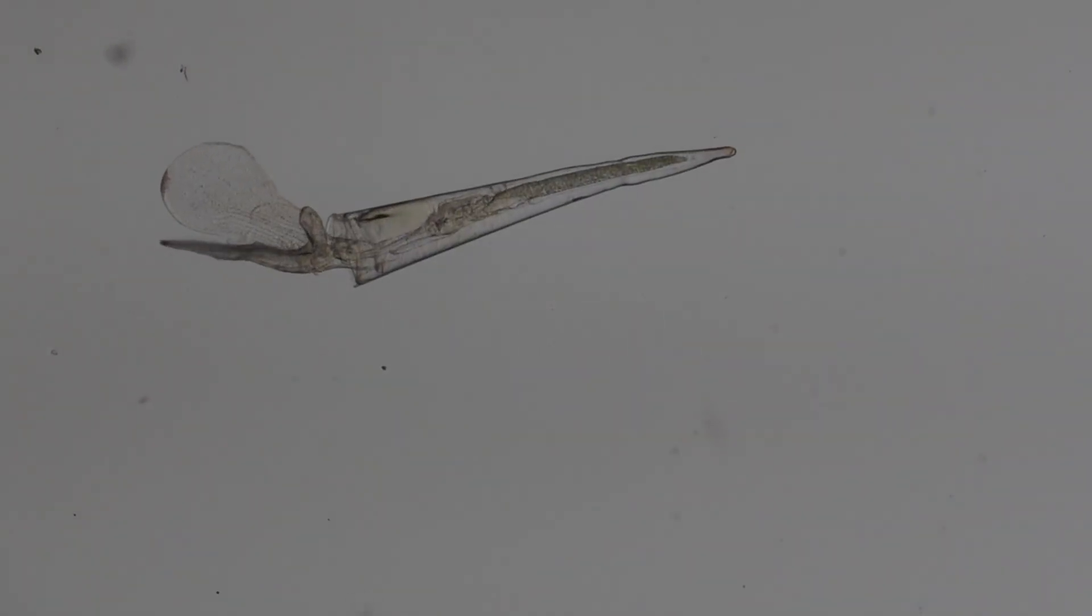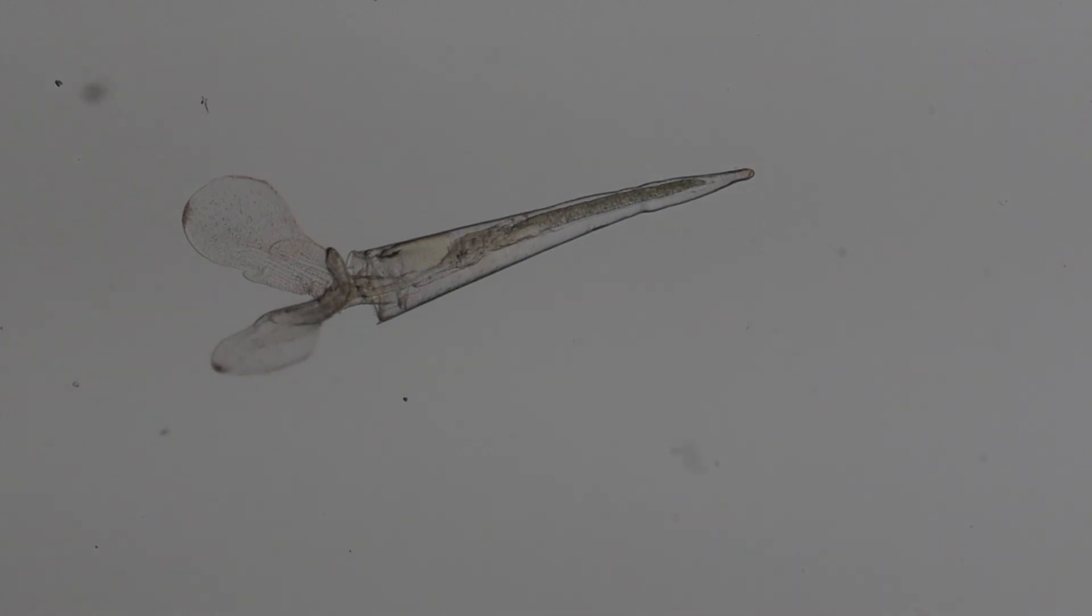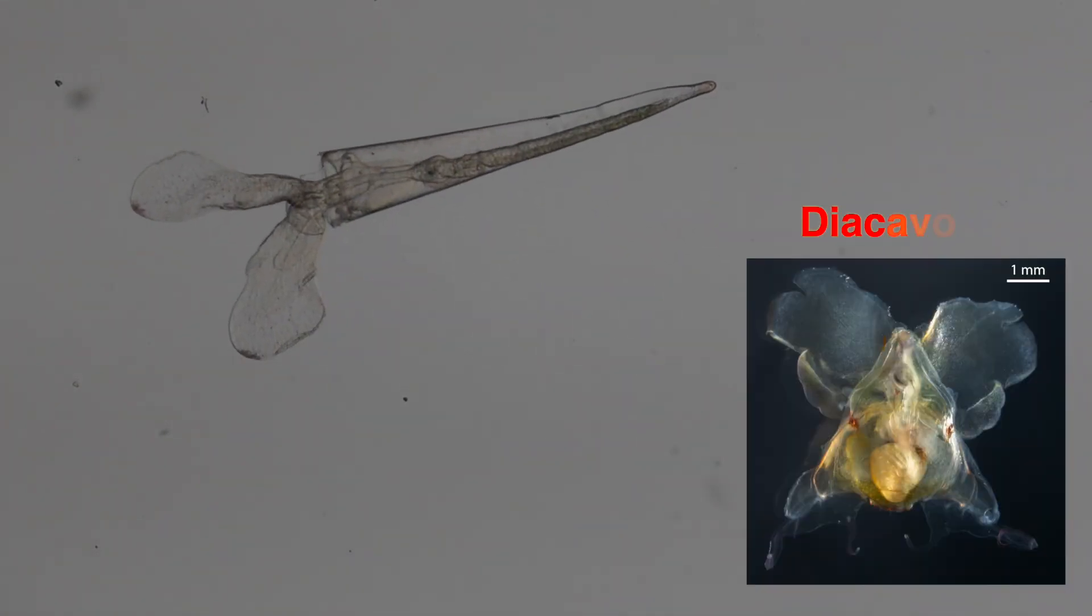Cresseids are one of the many groups of planktonic gastropods. Some of them are very different from this one, and each one of them has an important role in the marine system.